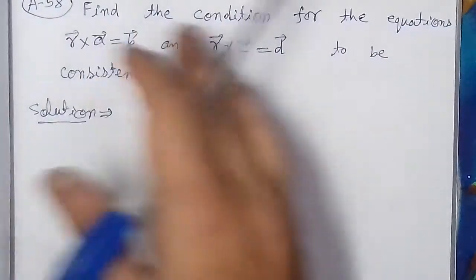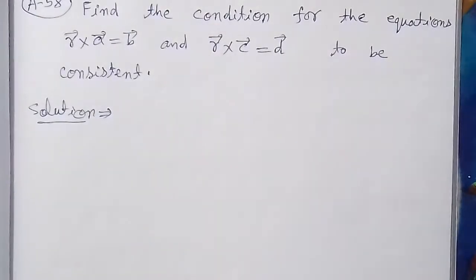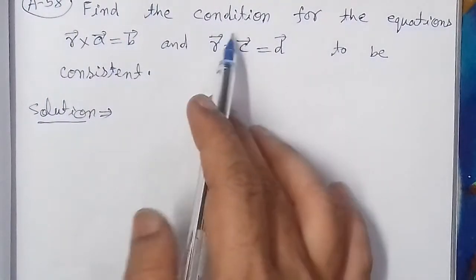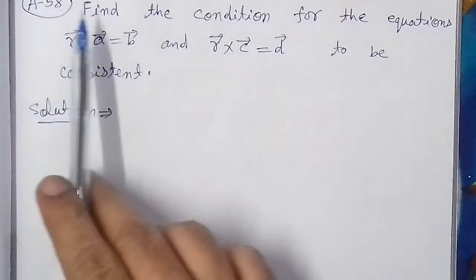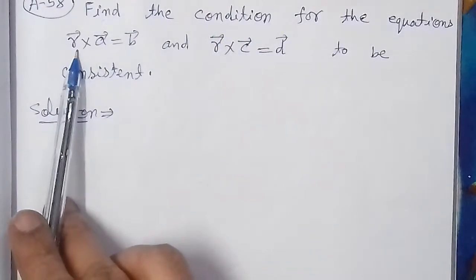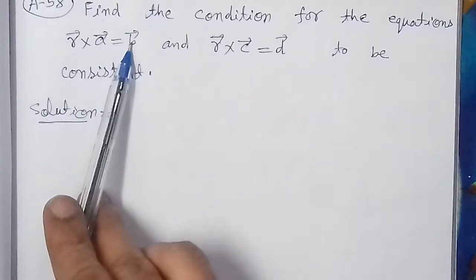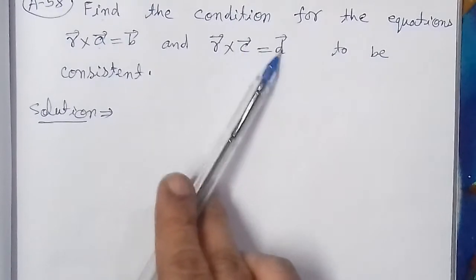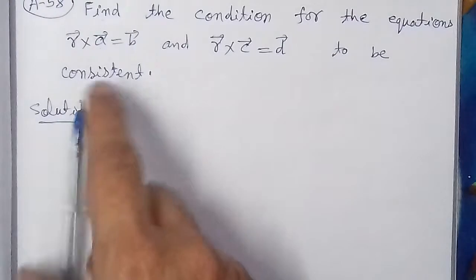Bismillahirrahmanirrahim. On the demand of Tanu Singh from Motihari, East Champaran, Bihar — find the condition for a problem in vector analysis. Find the condition for the equations: R⃗ × A⃗ = B⃗ and R⃗ × C⃗ = D⃗ to be consistent.